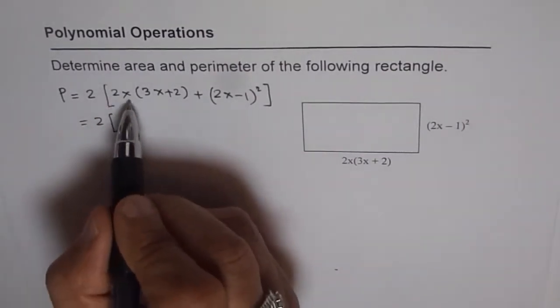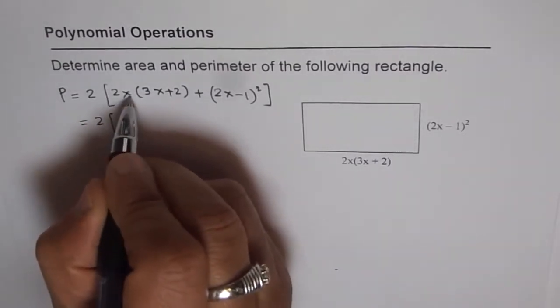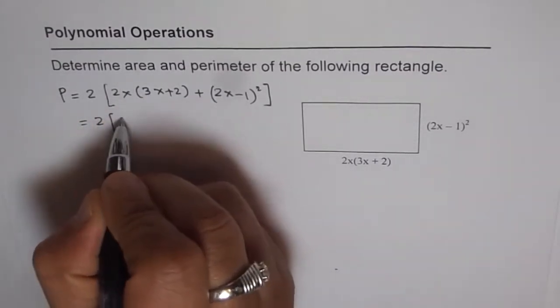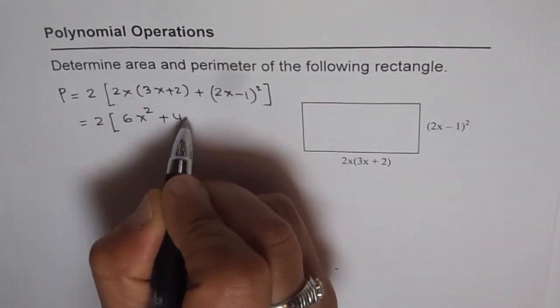So 2x times 3x plus 2. 2x gets multiplied with both of them. So we get 2x times 3x is 2 times 3 is 6x squared, and when you multiply by 2, 2x you get 4x.